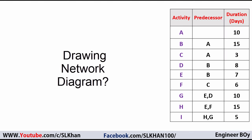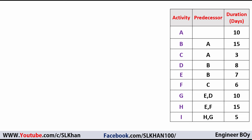The first thing I'm going to do is draw a rough diagram using nodes and arrows. Activity A does not have a predecessor but has a duration of 10 days, so it can be the start of the project. We can represent it with a node — no issue there.